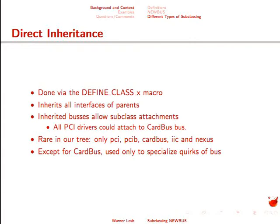In CardBus, PCI doesn't have a notion of what's called a CIS — the Card Information Structure — which is the information that CardBus has on each of the cards to describe what resources it uses, what voltages it needs to be powered on with, and so forth.